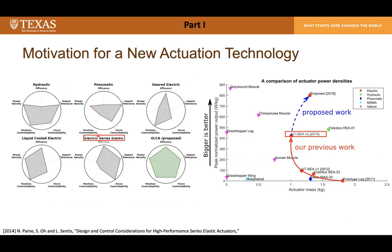There are existing actuation technologies each with their own pros and cons. For instance, the UT Series Elastic Actuator developed in our lab in 2014 demonstrated great energy efficiency, impact resistance, and force controllability, but showed poor torque density and poor position controllability. The research motivation of Part 1 is to study an all-around actuator across five metrics, aiming to develop a new type of series elastic actuator dubbed the Viscoelastic Liquid Cooled Actuator by replacing the metal spring with elastomer and incorporating a liquid cooling system.